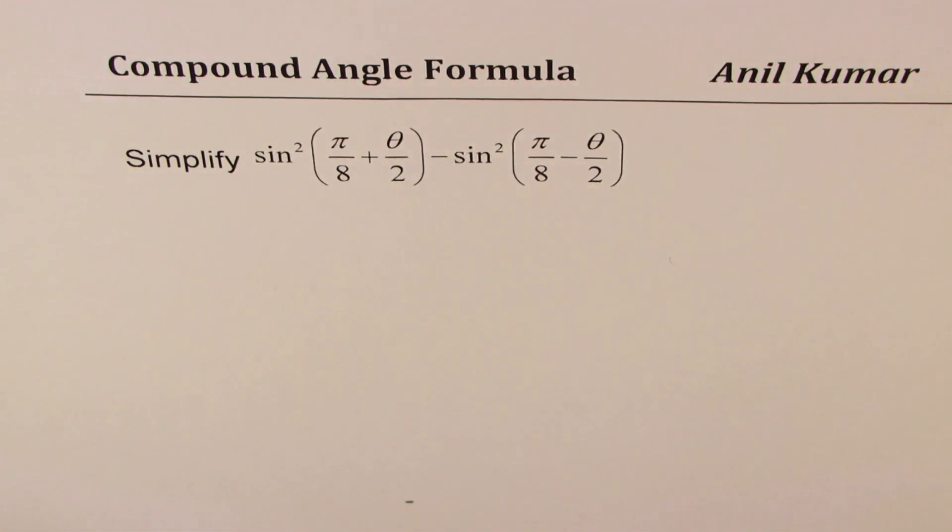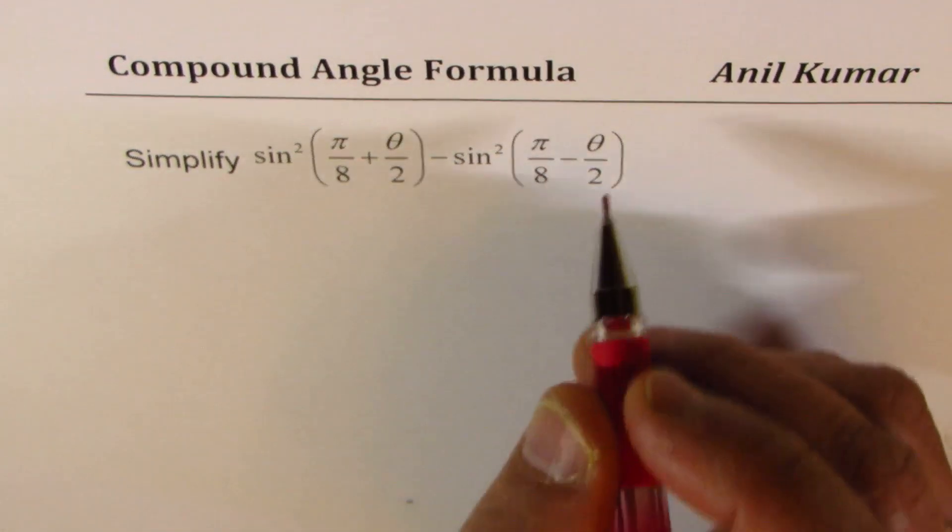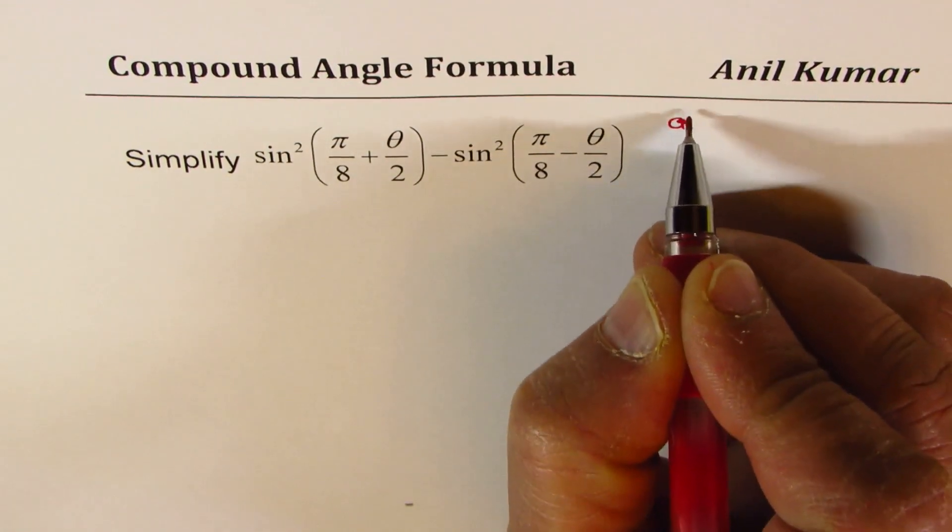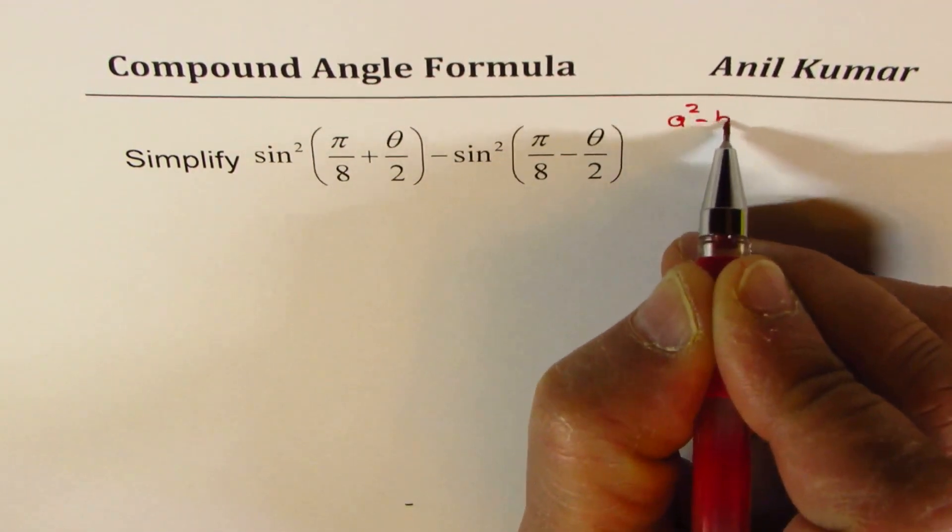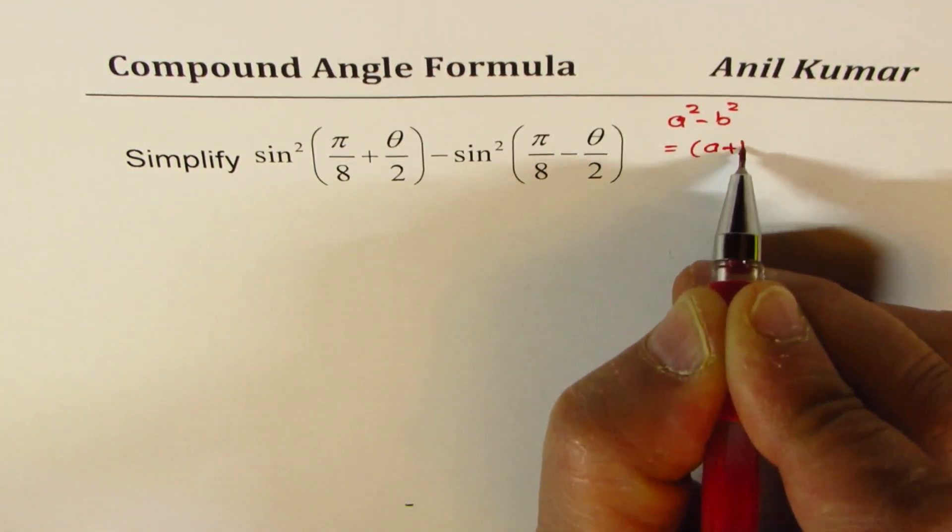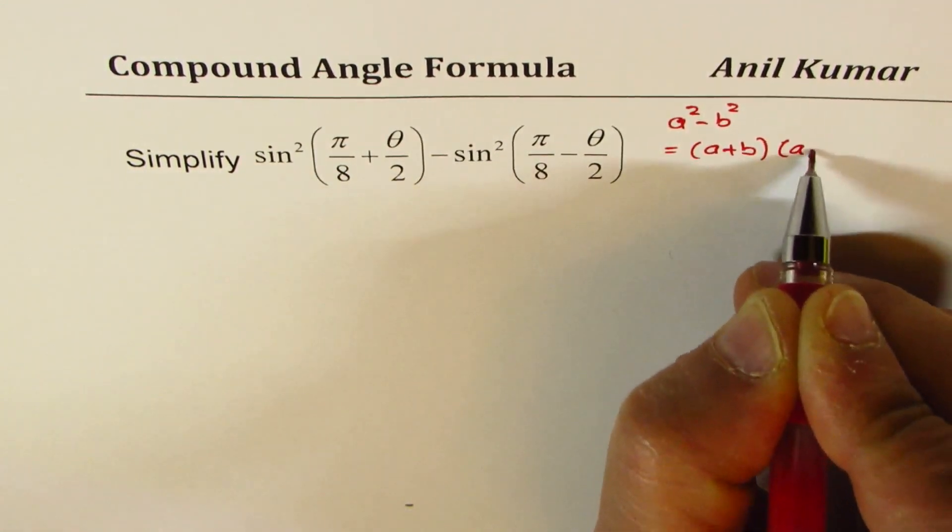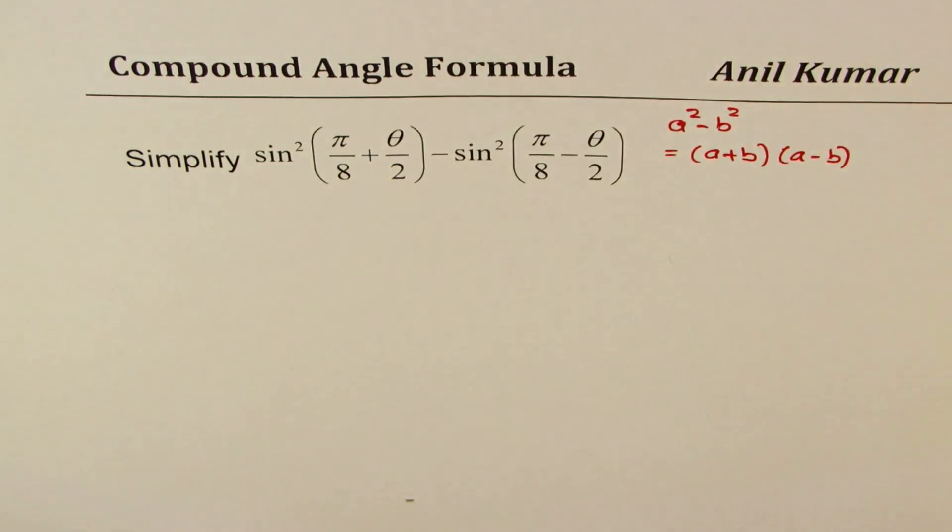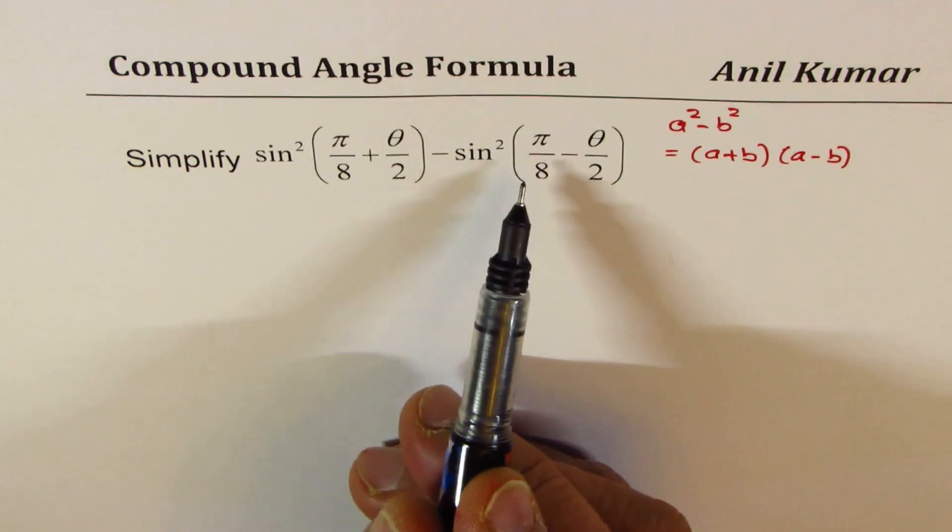To begin with, let's apply the formula which is difference of squares. So if I have a² - b², I could write this as (a + b)(a - b). So that is going to be my first step. We have a² - b² situation.